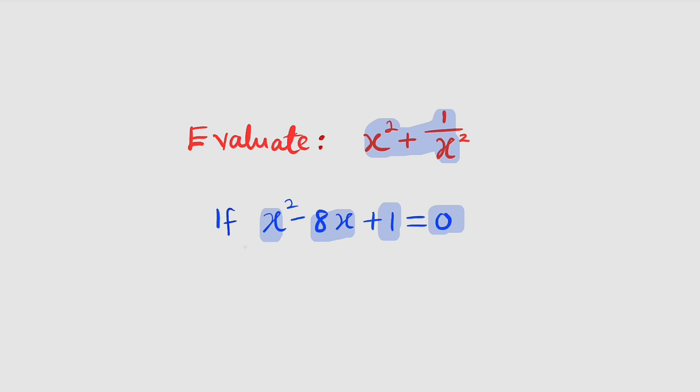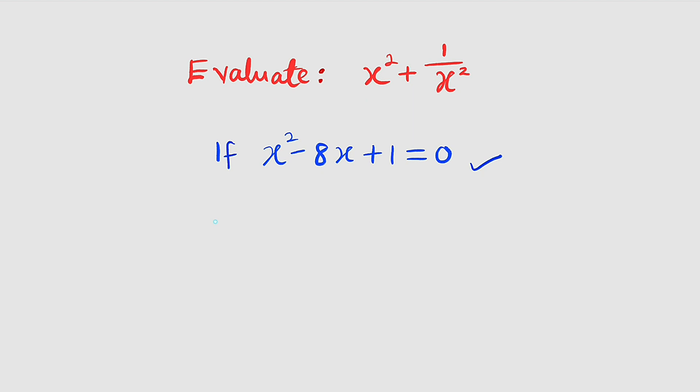Okay, we don't have to solve this equation to substitute in this expression. If we can transform this in this form, we are good to go. So from the given equation, let us divide every single term by x. So that we have x²/x - 8x/x + 1/x = 0/x.